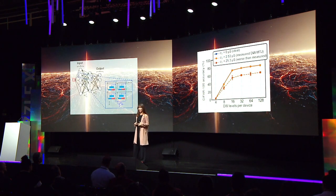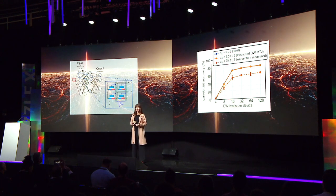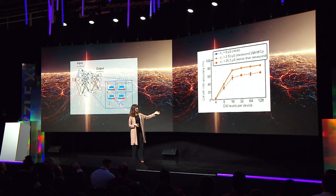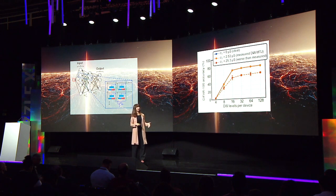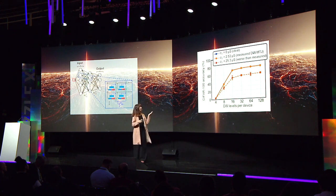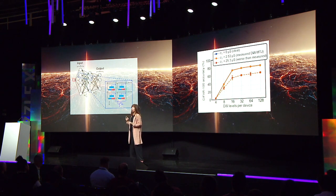We can take that data and put it into the inference application. We can look at how accurate it is at recognizing a particular dataset versus different notches we can put into our devices corresponding to different levels of resistance states. We can see that the orange curve of our measured devices is ideal compared to the ideal accuracy of this task. This impresses upon us the ability of these magnetic devices to be very useful for inference applications.